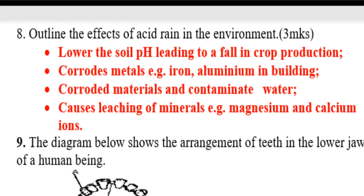Number eight: Outline the effects of acid rain on the environment. Number one: it lowers soil pH, leading to fallen crop production. Number two: it corrodes metals, e.g. iron and aluminium in buildings. Number three: it corrodes materials and contaminates water. Number four: it causes leaching of minerals like magnesium and calcium ions.